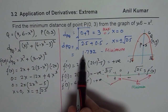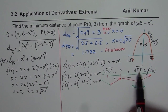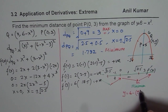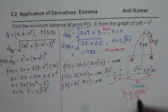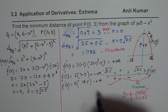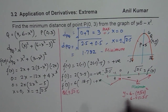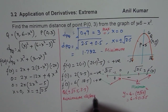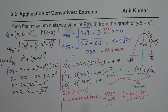We have calculated the minimum distance as approximately 1.732 units. If the question asked for the point, we substitute x equals plus or minus square root of 2.5 into y equals 6 minus x squared: y equals 6 minus 2.5 equals 3.5. So point Q is (plus or minus square root of 2.5, 3.5). The minimum distance is approximately 1.732 units. I hope the steps are absolutely clear — thank you and all the best.